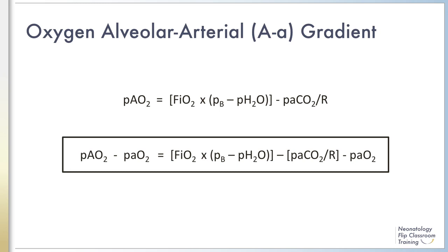If the A-a gradient for a patient on 100% oxygen remains greater than 600 for 8 to 12 hours, then extracorporeal membrane oxygenation, or ECMO, is considered.